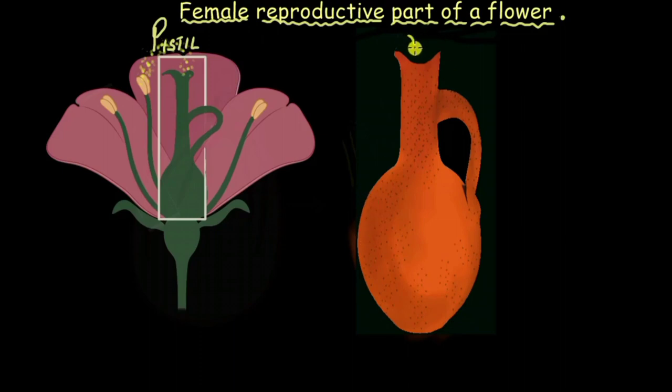See, if you want to pour water into this jug you will do it from the upper top, right from the mouth of the jar. In the same way, when the pollen tube from the pollen enters this pistil it will do it from the upper top portion.